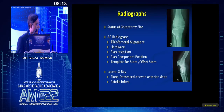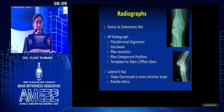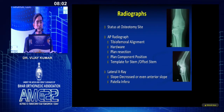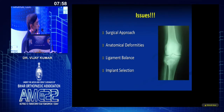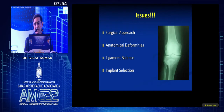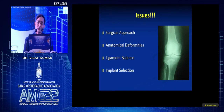Get standard radiographs done. Ideally, you require templating in these patients because sometimes there is an offset of the canal in the tibia. The slope is also increased or decreased in these patients. The main issues are basically four: the surgical approach, anatomical deformities from the previous osteotomy, achieving ligament balance, and the choice of implant.